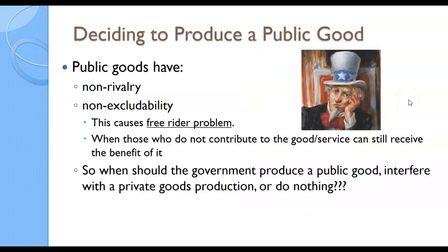When we're talking about externalities, a lot of times we're talking about public goods, which are non-rivalry and non-excludability. Non-rivalry means multiple people can use the same thing at the same time, like a public park. Non-excludability means you don't have to pay for admittance. This does cause the free-rider problem, which is when those who do not contribute to the good or service can still receive the benefit of it. So the question is: when should the government produce a public good, when should they interfere with a private good, and when should they do nothing? That's kind of the core of the conversation behind externalities, both positive and negative.